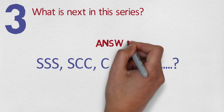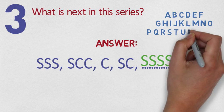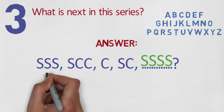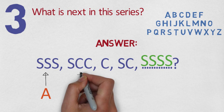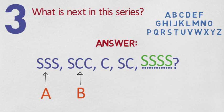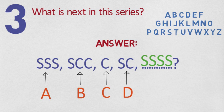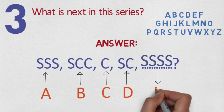The answer? SSSS. This series is actually the alphabet in code. Capital A equals SSS because it has three straight lines. B is SCC because it has one straight line and two curves. So C is C because it has one curve. And D is SC because it has one curve and one straight line. The next is SSSS because E has four straight lines.